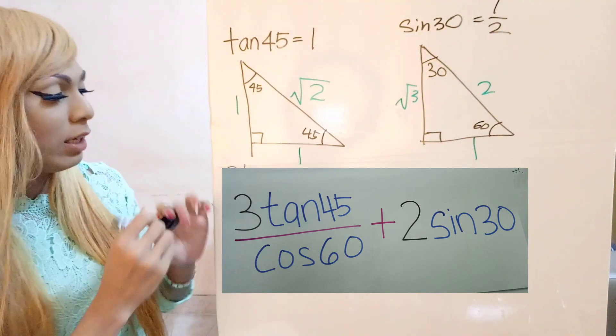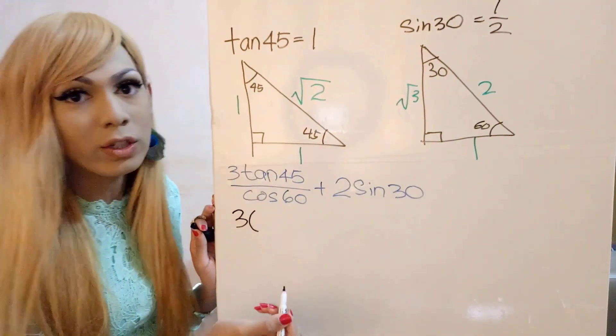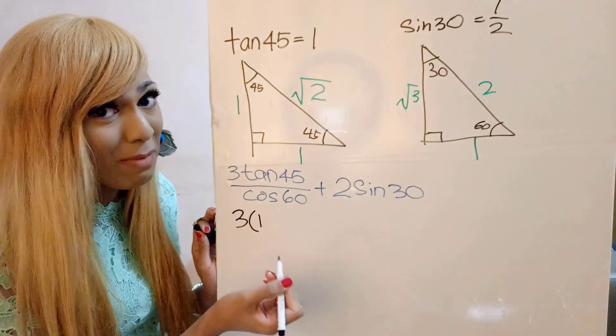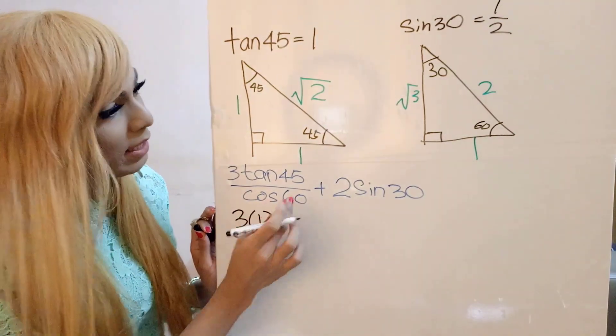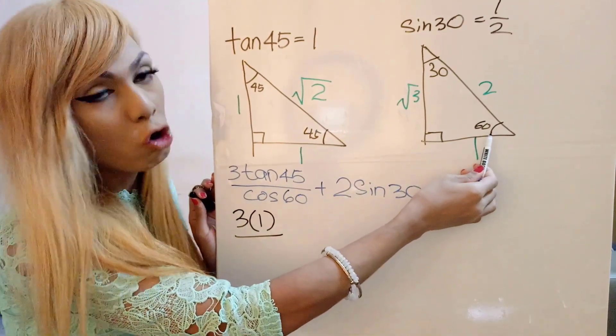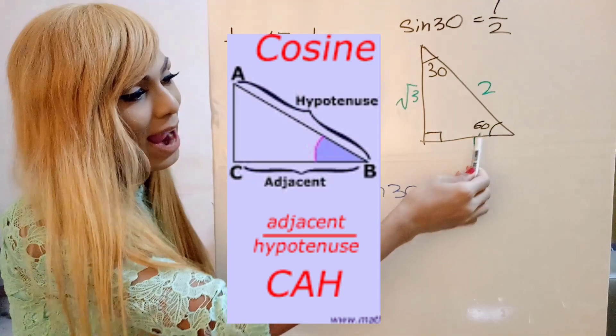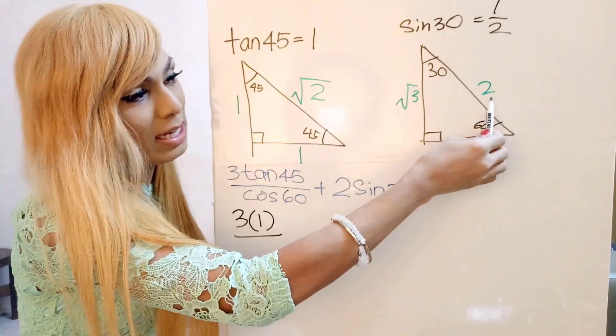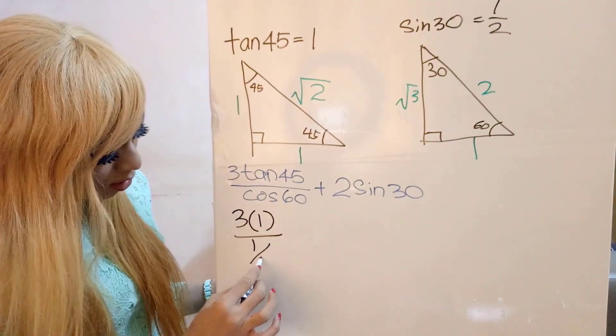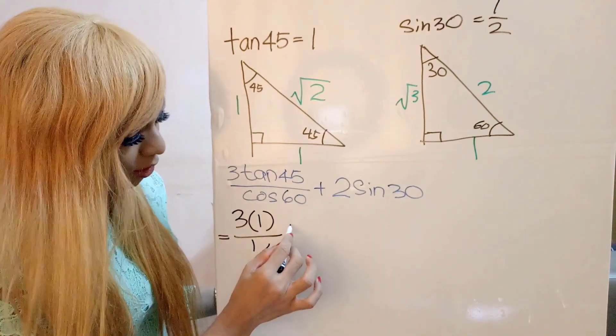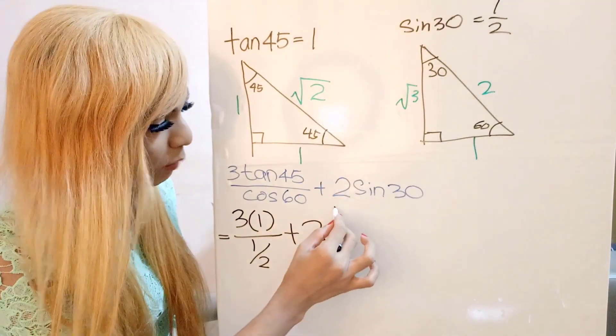So for this one, we have 3 tangent 45. So I will have 3. For tangent 45, of course, we already know the tangent 45 is 1. Now for cos 60, we will take a look at here. For cos is CAH, which is adjacent over hypotenuse. Adjacent here is 1 and hypotenuse is 2 for the 60. So I will have 1 over 2. And then I will just bring down this plus 2 sine 30. Sine 30, we already remember just now, which is 1 over 2.